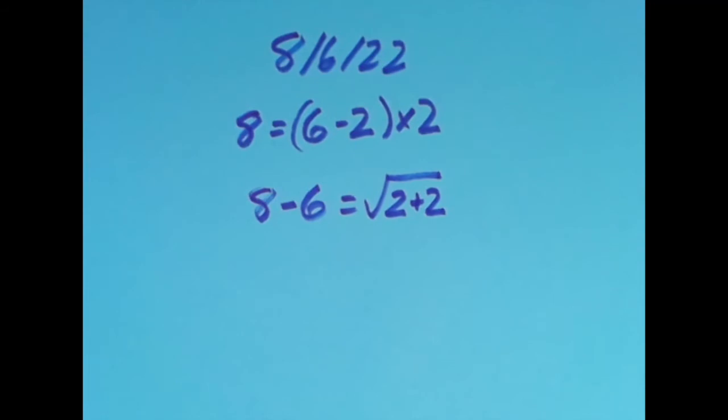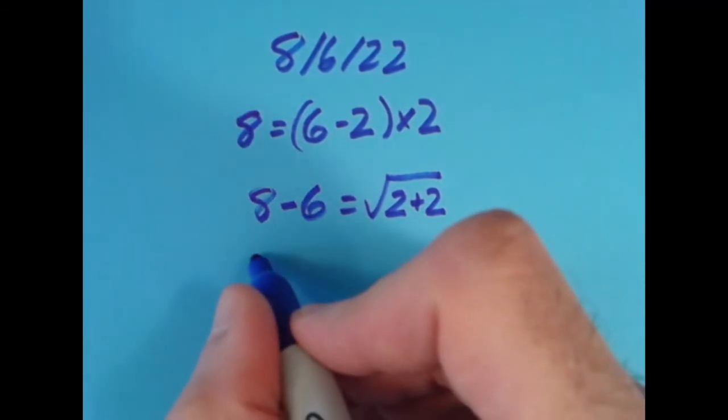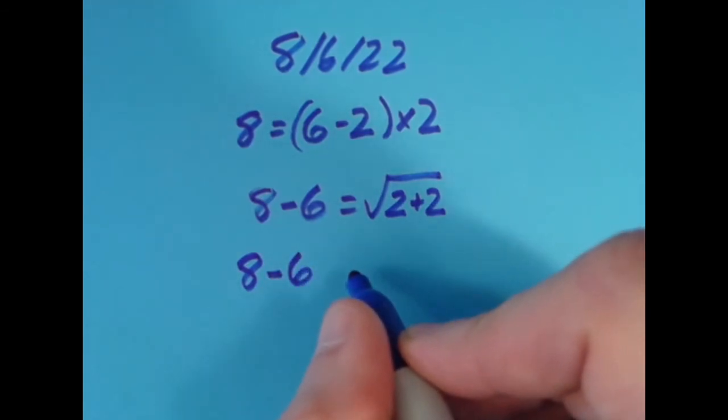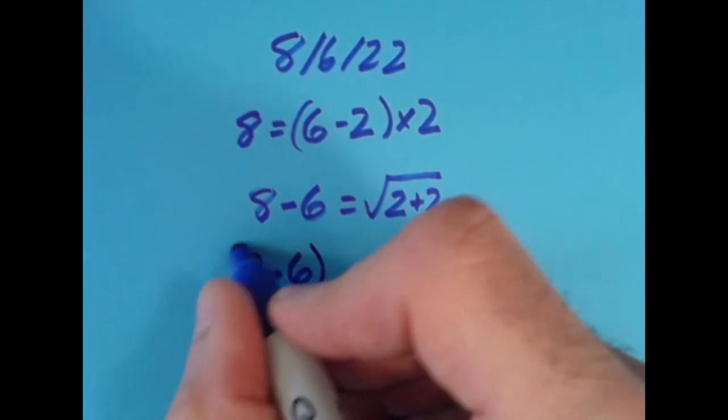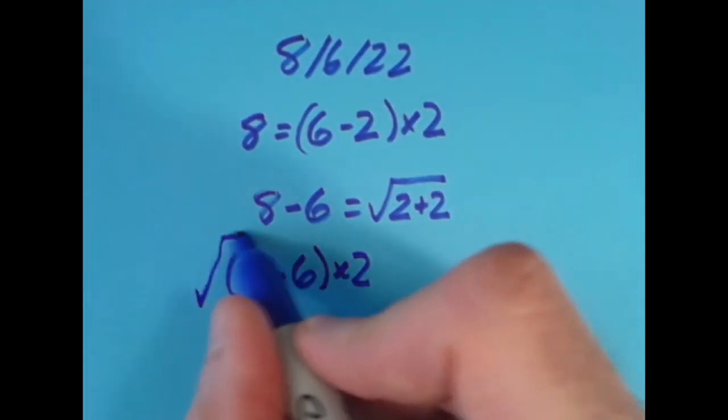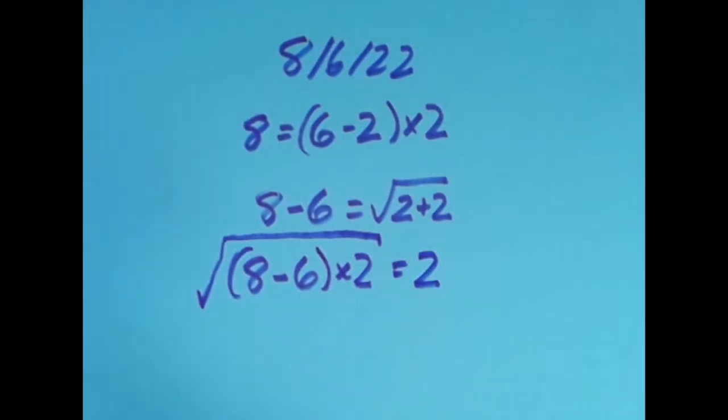I then tried it one more time with the equal sign all the way to the right and here I just said that 8 minus 6 which is 2. If I take that whole amount and I multiply that by 2 that's going to give us 4 and the square root of that 4 gives us 2.